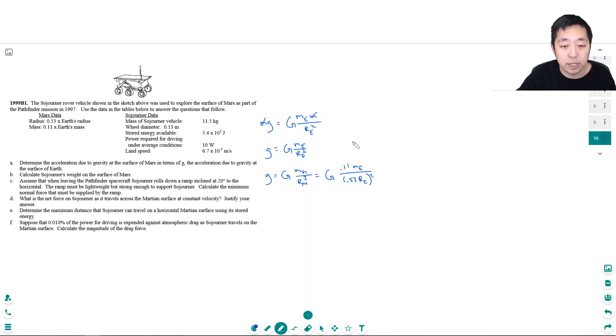And I know the radius of Mars is 0.53 the radius of Earth. So I'm just replacing the mass. I just plug that in there and I could bring out all the constants. This would be 0.11 over 0.53 squared times G mass of Earth over radius of Earth squared. And this part is just g. So this would be 0.11 divided by 0.53 squared, that would be 0.392 g.